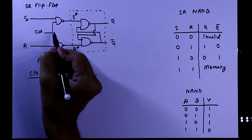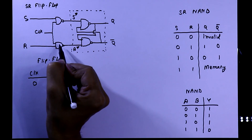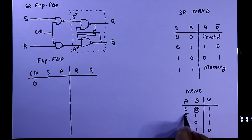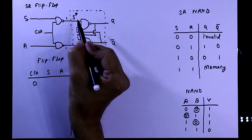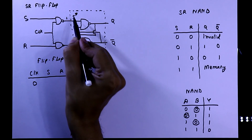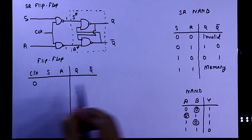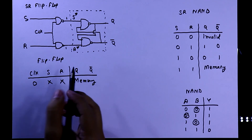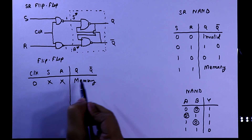When clock is zero, then one input of each NAND gate is zero. Whenever one input of a NAND gate is zero, we will get one as output. If both inputs of the SR latch — S and R — are one, one, then it will be in memory state. So whenever clock is zero, it will be in memory state, and it doesn't matter whatever the inputs are. Using any value on S and R, if clock is zero, it will always be in memory state.